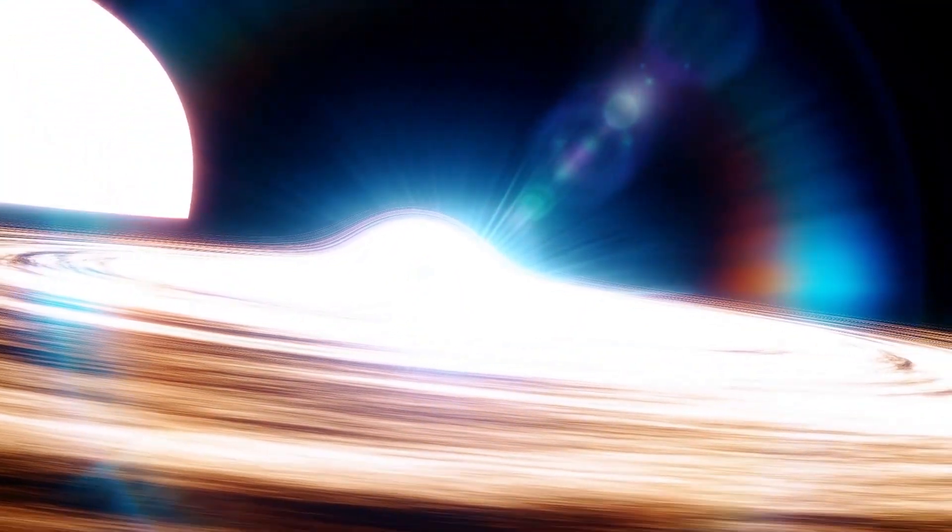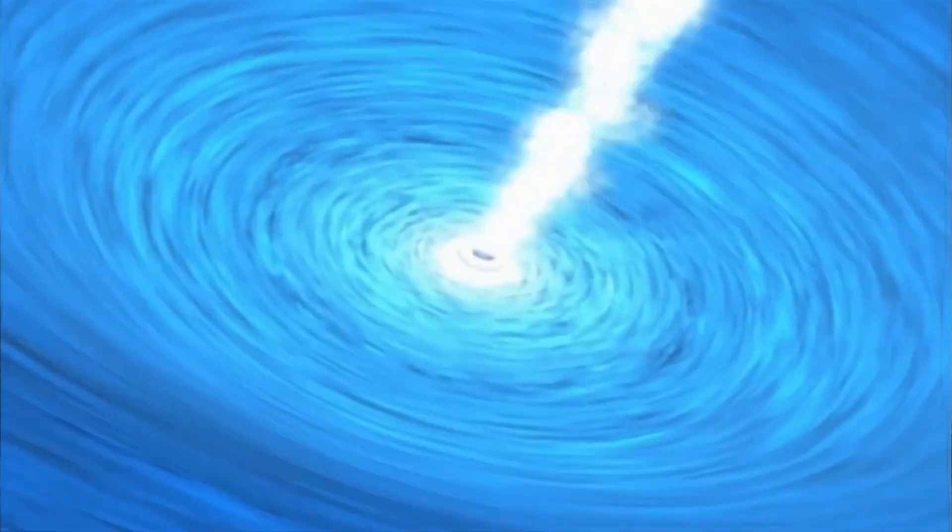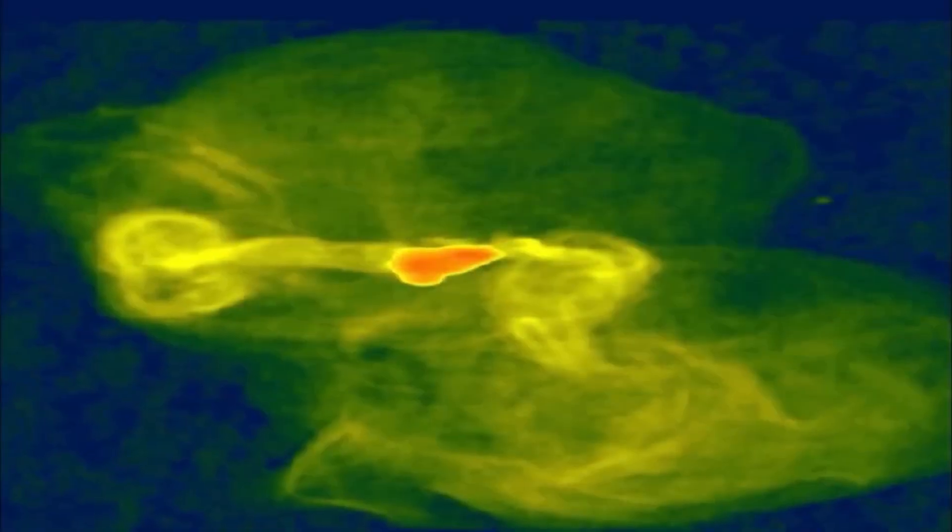The distinguishing feature of a white hole is that it only allows matter and energy to flow outward. Nothing can cross its event horizon from the outside to the inside, which distinguishes it primarily from black holes.